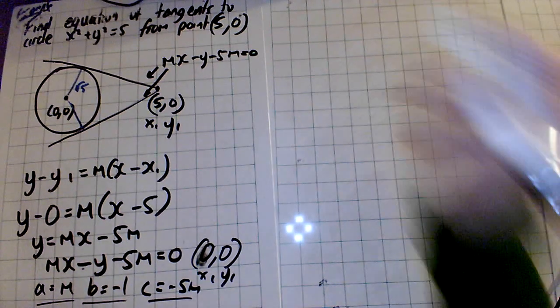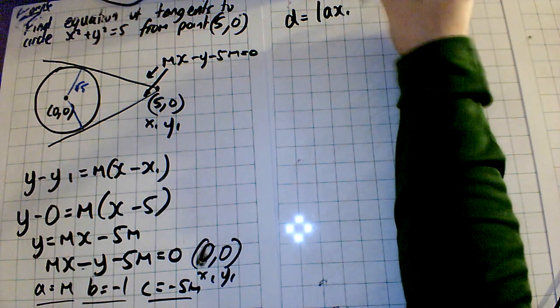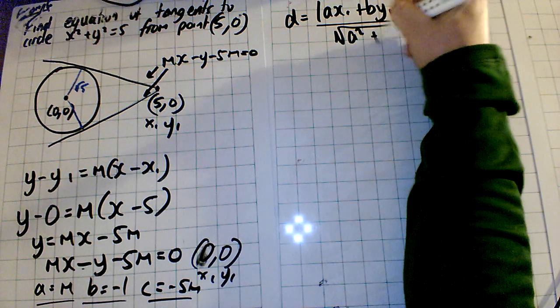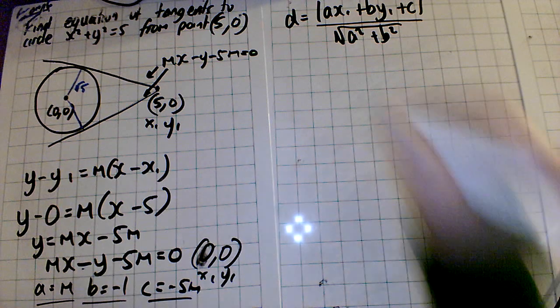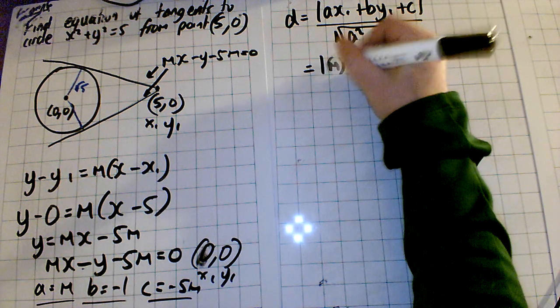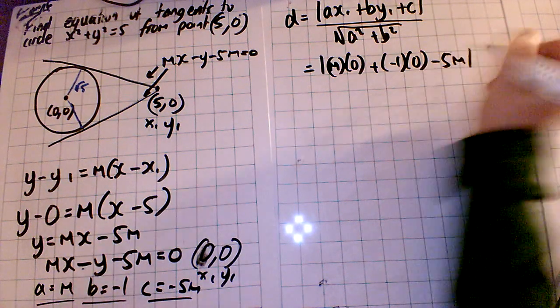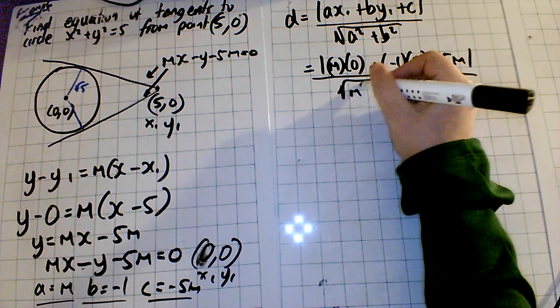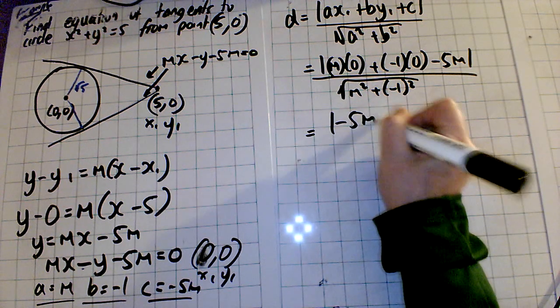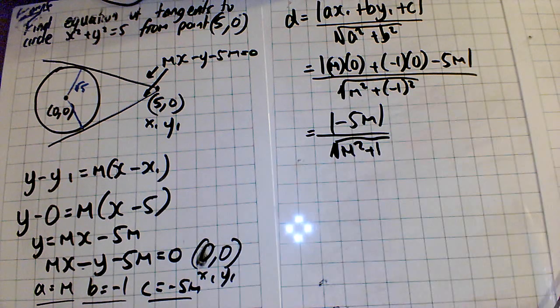We then go to our perpendicular distance formula, that's given in your maths tables. So the perpendicular distance, remember those straight lines: ax₁ plus by₁ plus c, all over the square root a squared plus b squared. That's in your maths tables. We carefully fill that out. So we have a, which is, looking back on the previous page, a is m times 0, plus minus 1 times 0, minus 5m, all over the square root of m squared plus minus 1 squared. We'll simplify that. We get minus 5m on the top, in those straight lines, keep them there, and we get the square root of m squared plus 1, because minus 1 squared is plus 1.